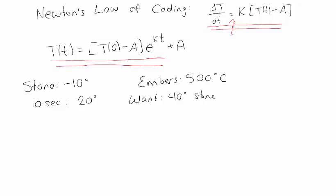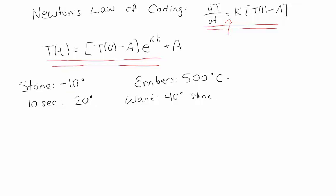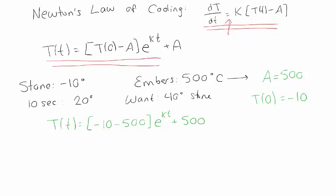I'm using my temperature equation, the one that's written T(0) minus A times e to the kT plus A. So one thing I know, my embers, those are the things that aren't changing. So this is going to be my ambient temperature. And my stone, that's the thing that's changing, so that's the thing I want the temperature of. And at first, when I put it in the fire, it's minus 10 degrees, so T(0) is minus 10. So this is going to give me the equation so far. T(t) is T(0), that's minus 10, minus my ambient temperature, that's the 500 degree embers, e to some kT plus my ambient temperature again. And remember, k is just some constant. It's a constant of proportionality. It's going to be something like the rate. The units aren't going to be exactly right, but something like the rate of how fast your stone is heating. So we can simplify this to be minus 510 e to the kT plus 500.